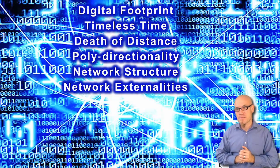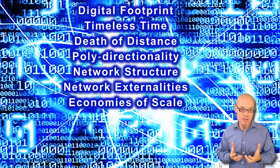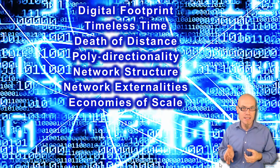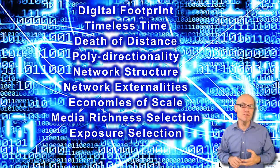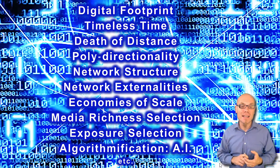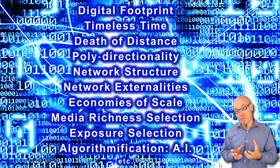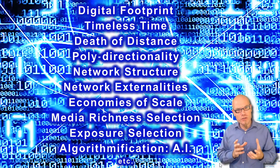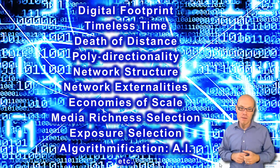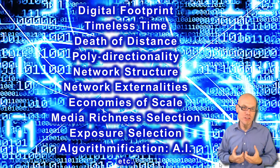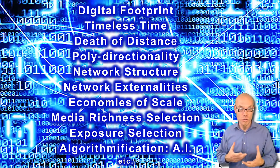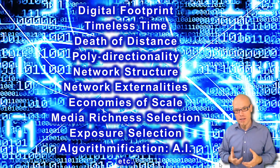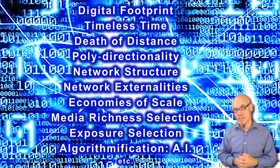Network externalities have a lot to do with that. Then economies of scale — you can take digital content and simply copy-paste it, which has many delicate consequences. Media original selection, exposure selection, and what I call algorithmification: the fact that we have started to replace what were previously human decisions, driven by human intelligence, with algorithms and artificial intelligence. That starts with the information you see presented in a social network — algorithms take the decision of what you see and what you don't — and goes as far as replacing jobs with robotics through artificial intelligence.